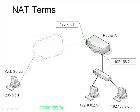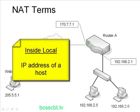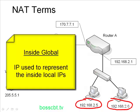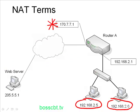The last thing to cover is some terms used when talking about NAT. The first term is inside local — this refers to the IP address of a host on your internal network; these are your inside local IP addresses. The next term is inside global — that is the IP used to represent your inside local IP addresses to the outside world. Generally, your inside global is going to be a public IP, and your inside local addresses will oftentimes be private IPs.